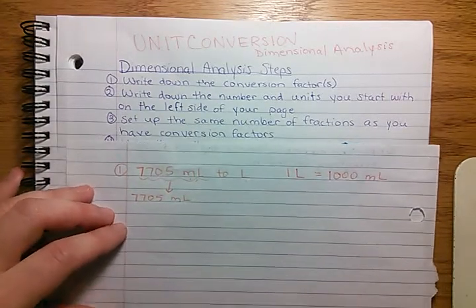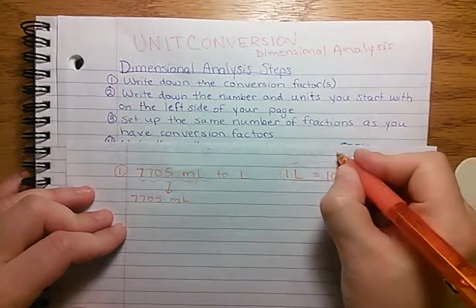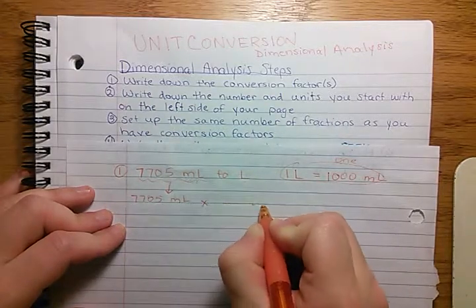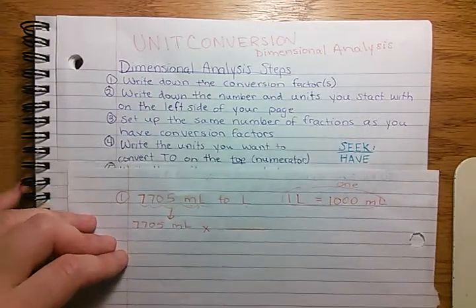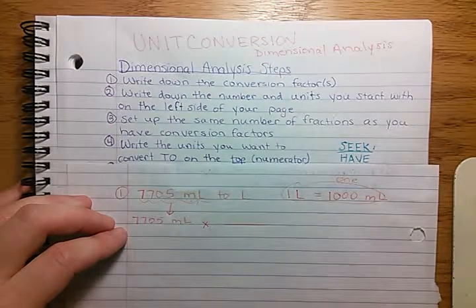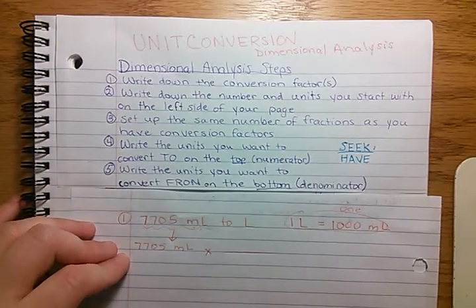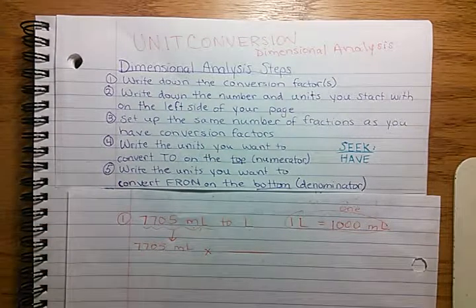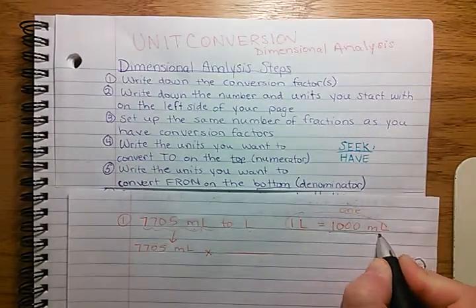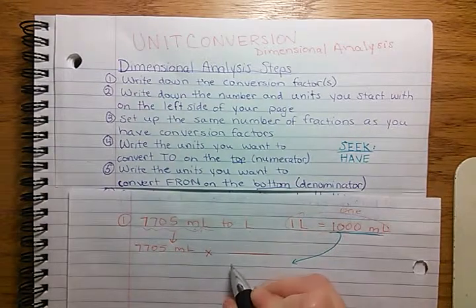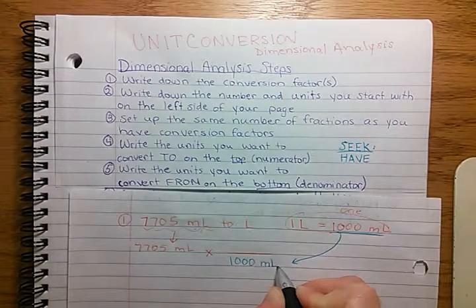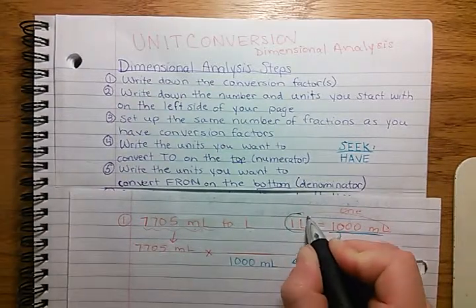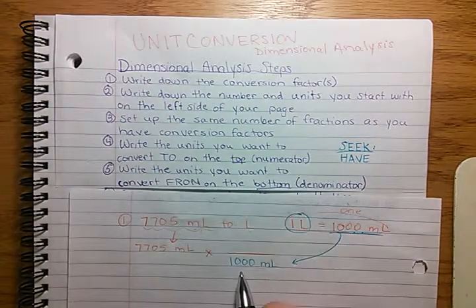Then you want to set up the same number of fractions as you have conversion factors. We have one conversion factor, so we set up one fraction — put a multiplication sign and set up our fraction. Write the units you want to convert to on the top (seek), and write the units you want to convert from on the bottom (have). The units I already have are milliliters, so I write 1,000 milliliters on the bottom. The units I am seeking is the liter. The conversion factor tells us that 1,000 milliliters is equal to one liter.